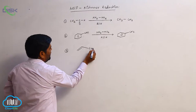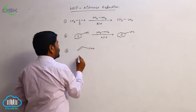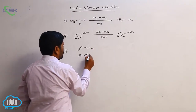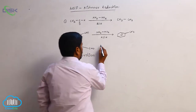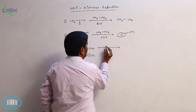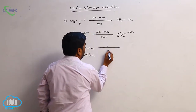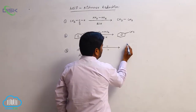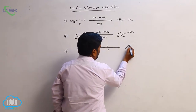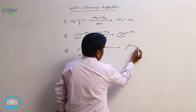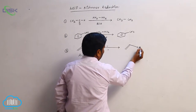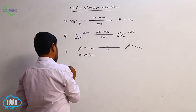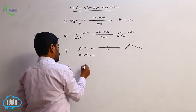This compound is acrolein. Acrolein is also reduced by Wolff-Kishner reduction. The double bond is not disturbed, but the carbonyl is converted to CH3. That is the fourth example.